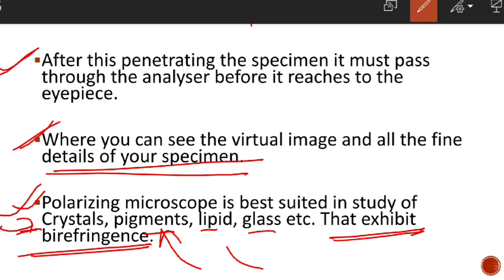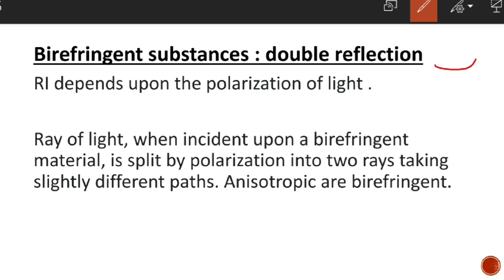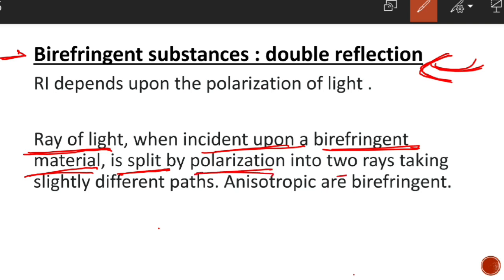Birefringence, also called double refraction, means a substance has two refractive indices. When a ray of light is introduced upon a birefringent material, it is split into two rays taking slightly different paths. Anisotropic substances are birefringent — when polarized light hits them, two rays follow different paths, showing birefringence.